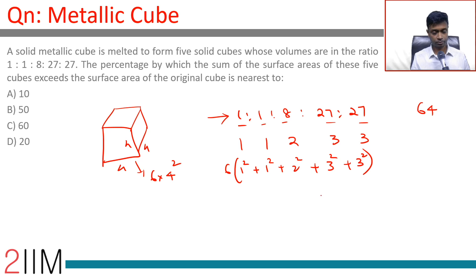So from 6 into 4 square it goes to this. Think about percentage increase, so we just need to worry about the ratio. 4 square is 16, so we can forget about the 6. 1 plus 1...